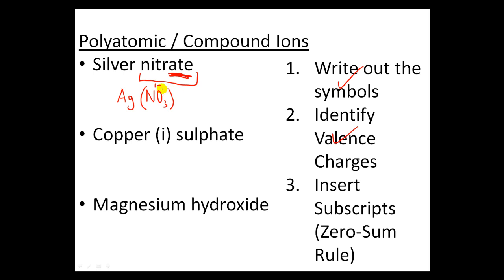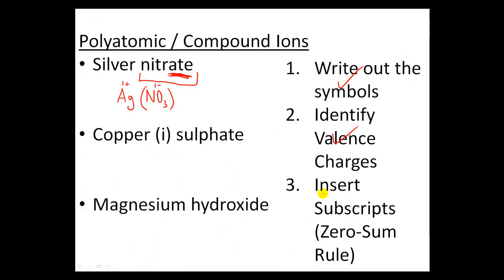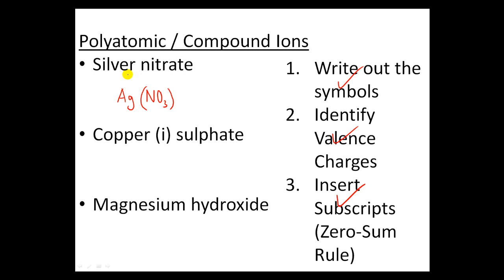Next step: identify the valence charges. We've identified nitrate as a 1- charge. Silver has a 1+ charge, which we can verify on the valence sheet. Final step: insert subscripts if necessary to follow the zero-sum rule. I have 1+ and 1-, which does add up to zero, so this is a stable compound. The final answer is AgNO3.